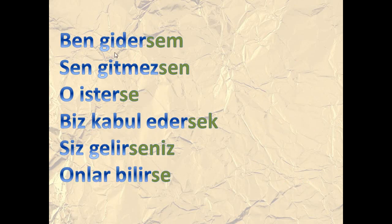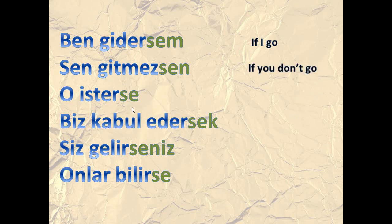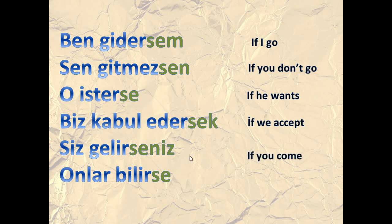Here we have the geniş zaman (aorist) form. Ben gidersem means 'if I go.' Sen gitmezsen means 'if you don't go.' O isterse means 'if he wants.' Biz kabul edersek means 'if we accept.' Siz gelirseniz means 'if you come.' Onlar bilirse means 'if they know.' This structure is something like simple present — if something happens — and it is used a lot.